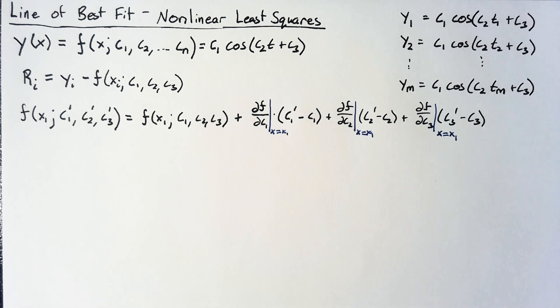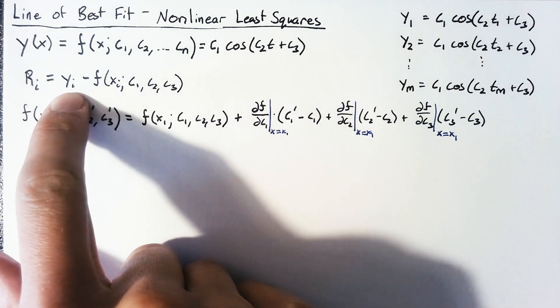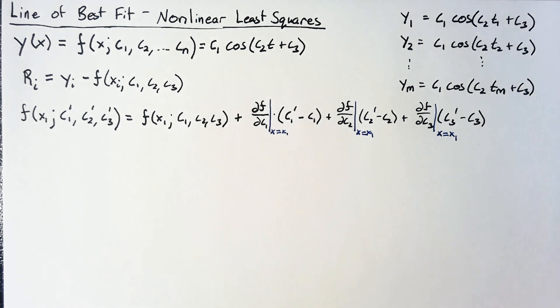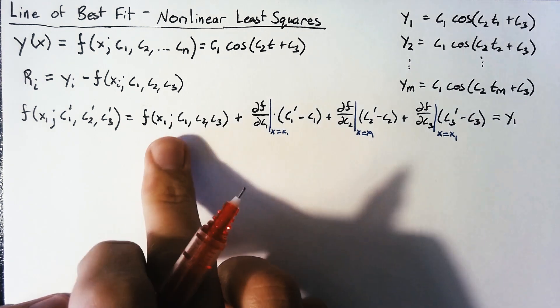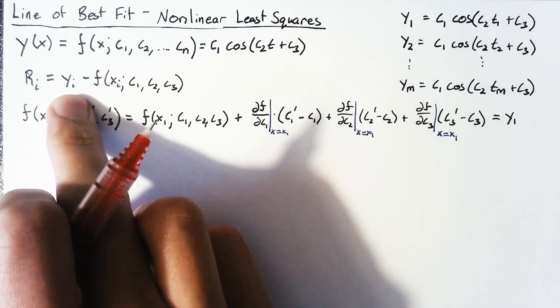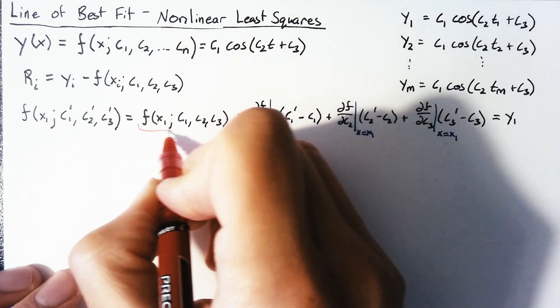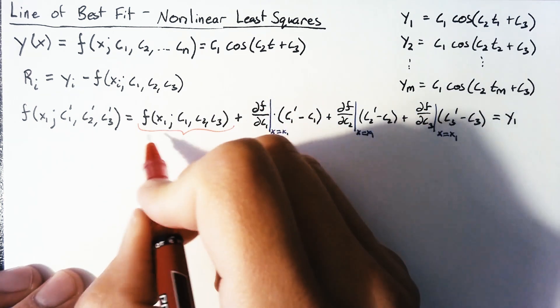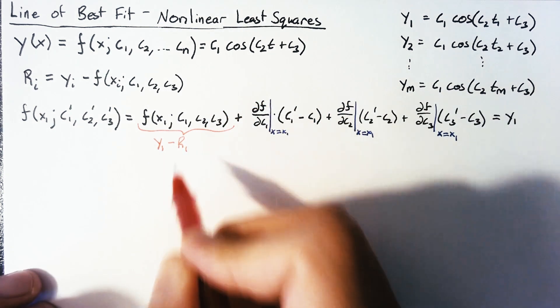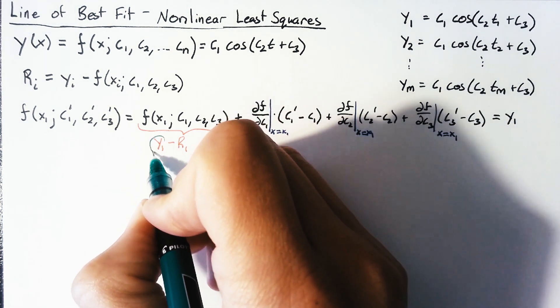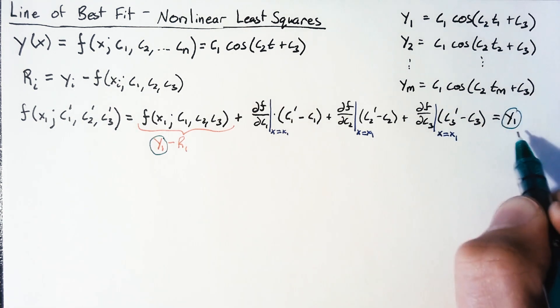So this is our Taylor series. The important thing is that we need to evaluate these derivatives at the point x equals x1, and we're also going to be using our original guess c1, c2, c3 to determine these derivatives. Our goal is that once we modify these parameters, we're going to end up with exactly our y term. So we want all of this together to equal y1.